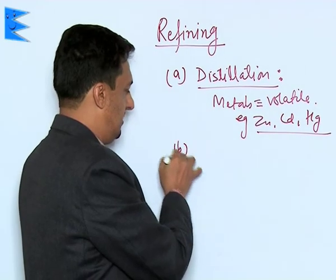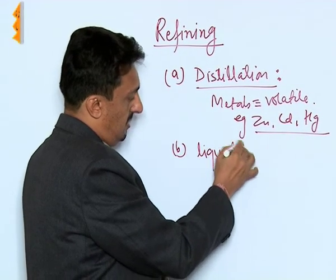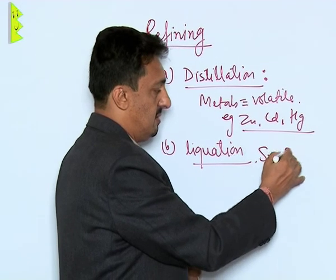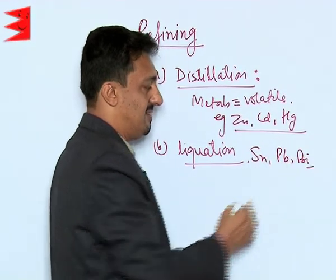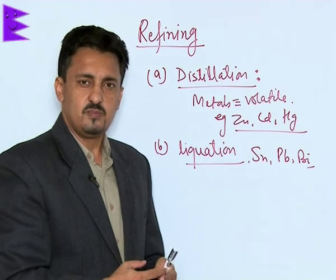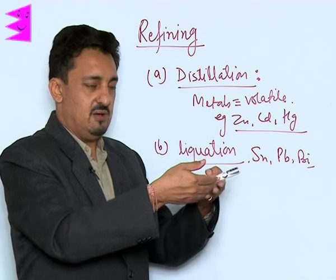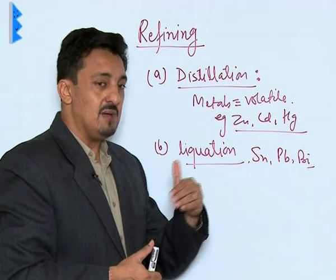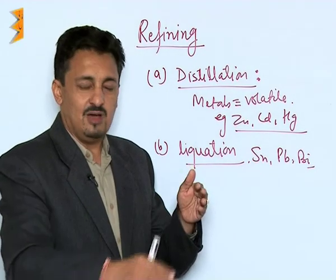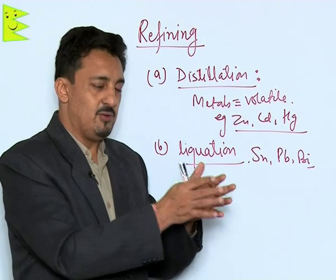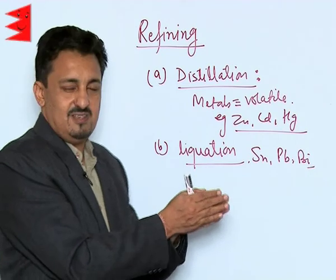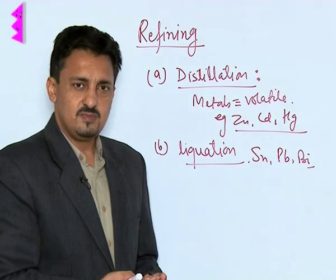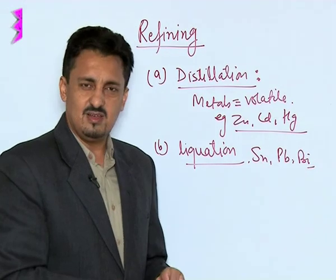The second method is called liquation, and it is mainly done for metals like tin, lead, and bismuth, whose melting points are very low. They are heated on a furnace which has a sloped surface. When these metals are heated above their melting points, they easily melt down to give you the pure metals, while all the impurities which remain in the solid state get easily separated out. So it is mainly used when the metal's melting point is lower than the impurities' melting point, as in the case of lead, tin, and bismuth.